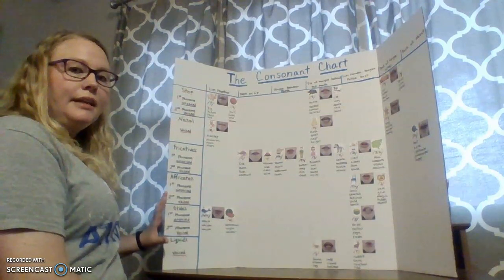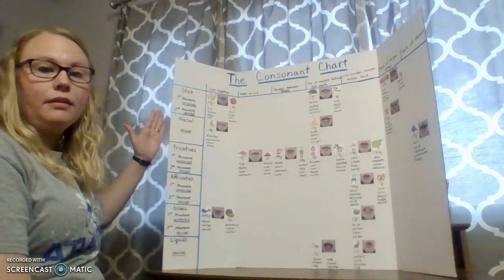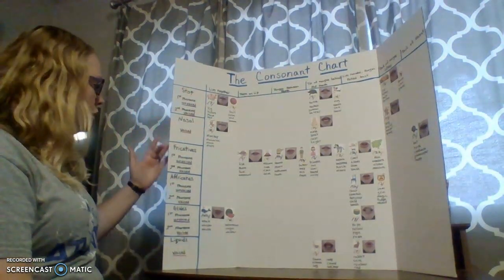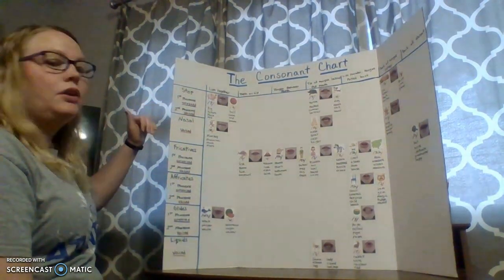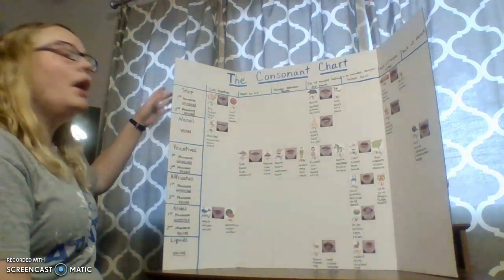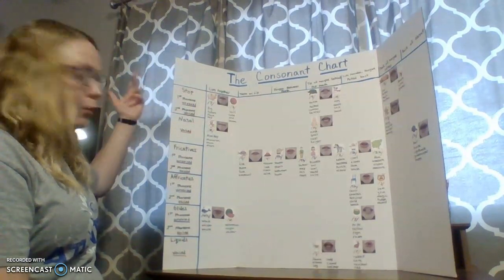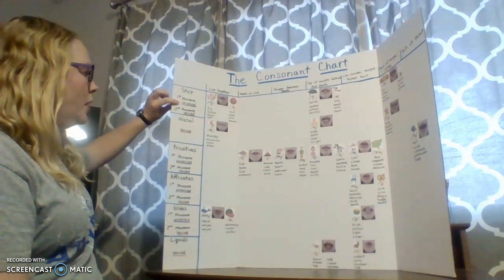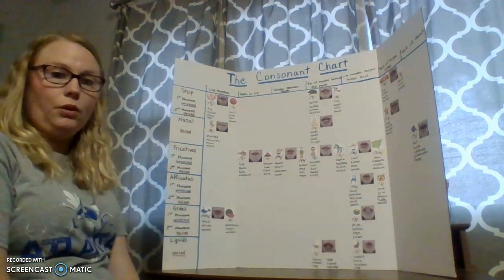On the left-hand side of the wall, you have the type of consonant — for instance, a stop, a nasal, fricatives, affricates, glides and liquids. It also tells the person using it, or the child, whether the consonant's phoneme is voiced or unvoiced. On my chart, unvoiced is in purple and voiced is in orange.